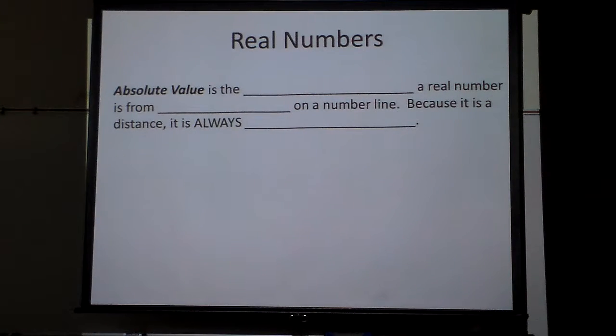Absolute value is the distance a real number is from zero on a number line. Because it's a distance, it is always positive. Absolute value just means how far is it from zero.